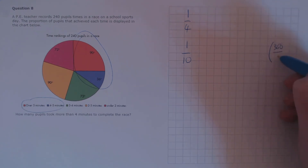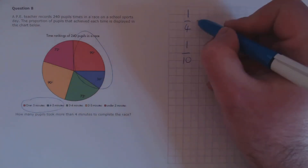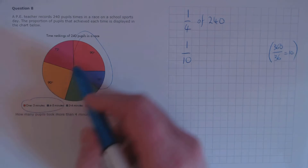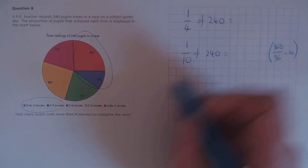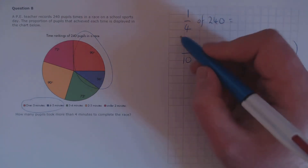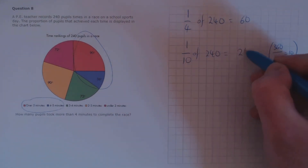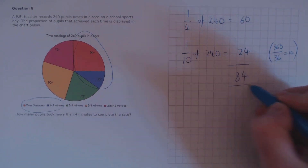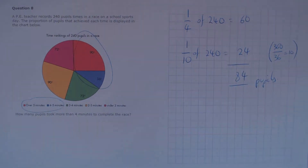We need to find a quarter of the 240 pupils — those that took over five minutes — and a tenth of 240, those that took four to five minutes. A quarter of 240 is 60 pupils, and a tenth of 240 is 24. Finally, we add these two together, which gives us 84 pupils that took more than four minutes to complete the race.